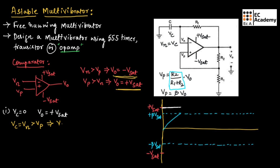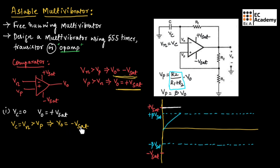Since the voltage across the negative terminal is greater than the voltage across the positive terminal, the output will move to negative V saturation. As we have seen, if VN is greater than VP, the output is minus V saturation. So the output voltage of the astable multivibrator will move to minus V saturation.